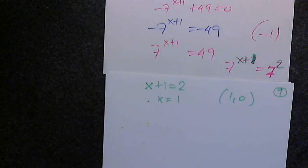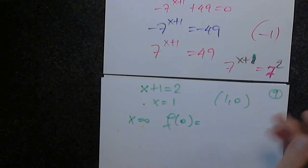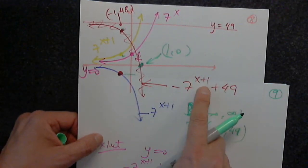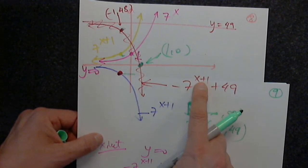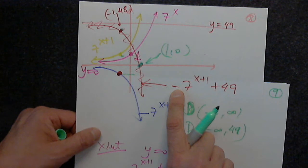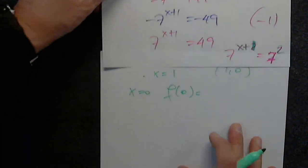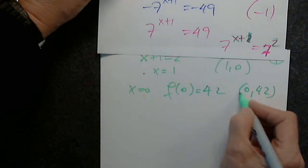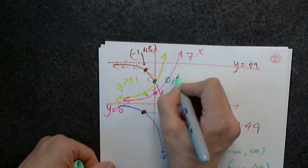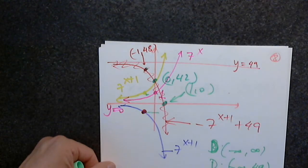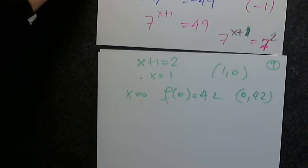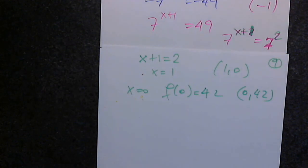To find the y-intercept, compute f(0): 7 to the 0 plus 1 equals 7 to the first power equals 7, with a negative in front, giving negative 7 plus 49 equals 42. So (0, 42) is the y-intercept. This was not an easy problem — it had a lot of steps.